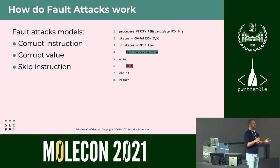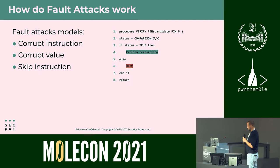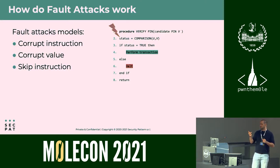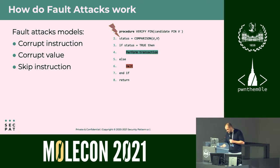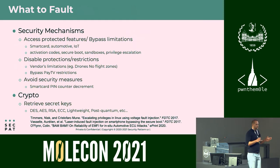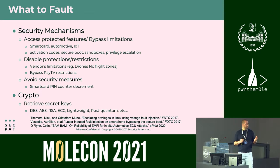We can identify at least three different fault attack models. The first is corrupt instruction: corrupting the comparison function may lead to a transaction being performed. The second is corrupt value: if the value in the register inside the smart card is corrupted, this can also provide a correct transaction. Finally, skipping one instruction can make the flow go directly to the perform transaction step. Fault attacks are therefore a real threat.